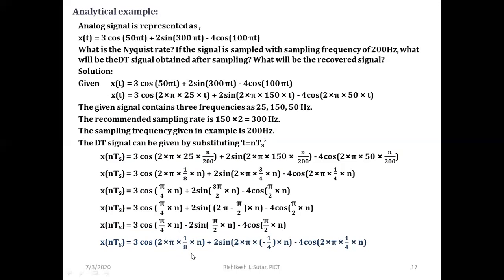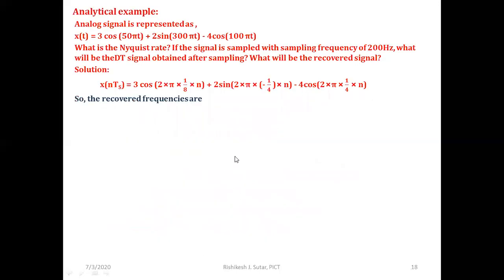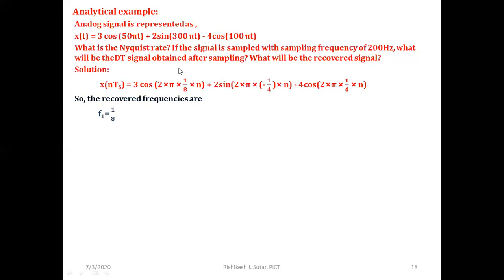In standard form 2πfn, we identify f1 = 1/8. The analog frequency F1 = f1 × fs = 1/8 × 200 = 25 Hz. So the first component's original frequency was 25 Hz and the recovered frequency is also 25 Hz — it is successfully recovered.